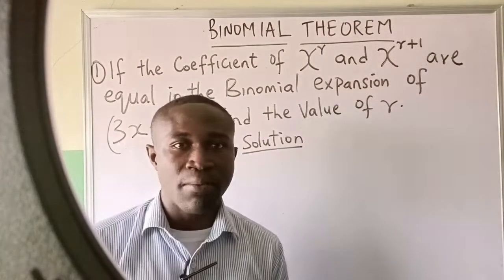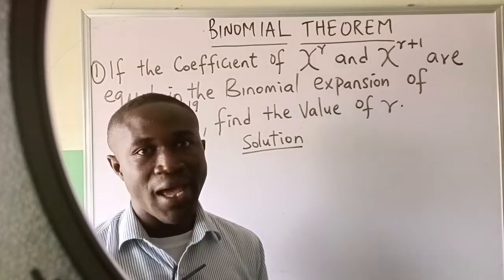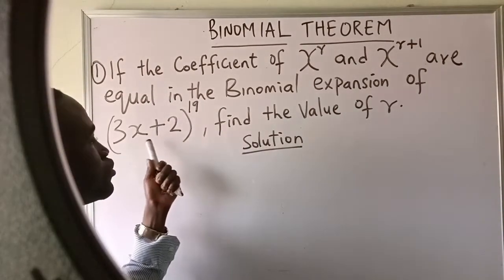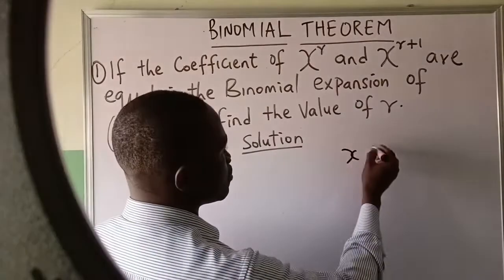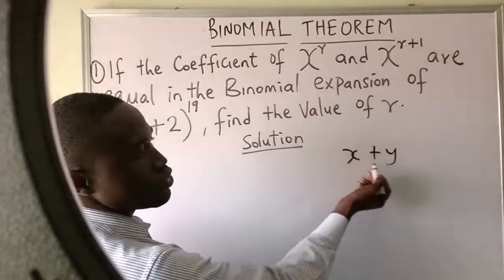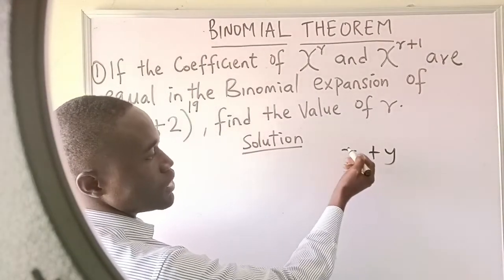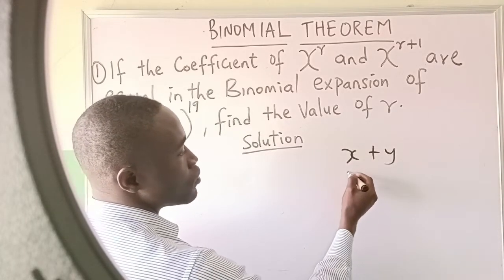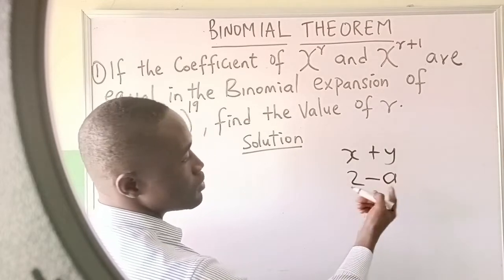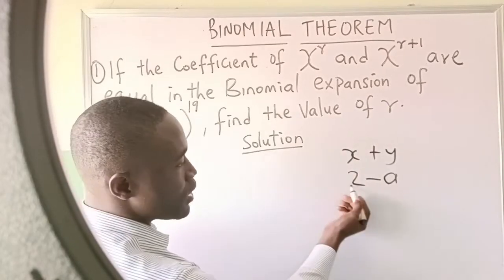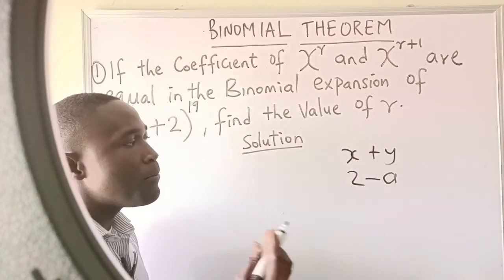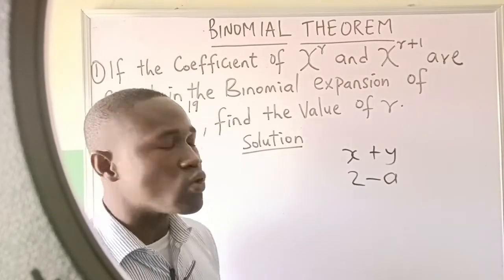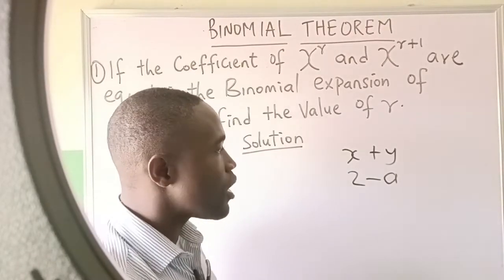The term binomial means a two-term algebraic expression. When you have two things given to you — one term and a second term — like 'two minus a', that is a two-term expression. Plus, minus, or both are used to define the number of terms.